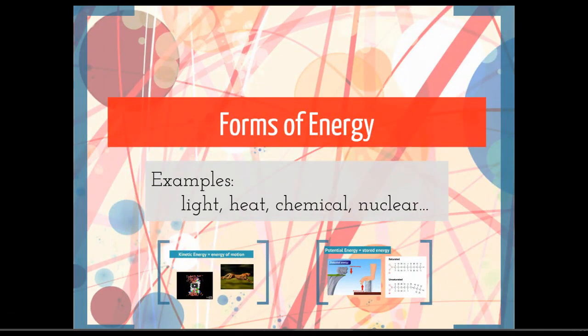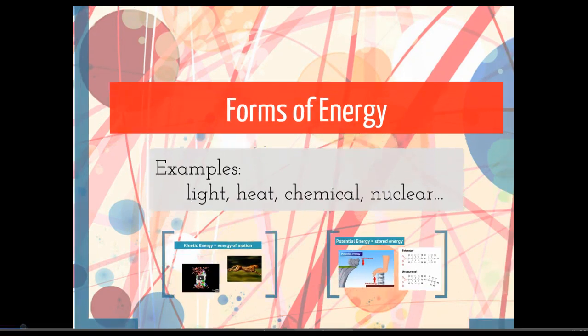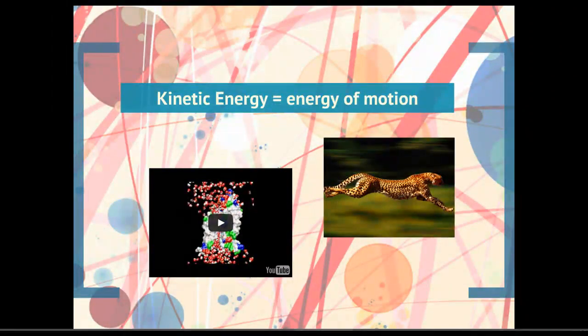Let's talk about energy briefly and then the rest of this lecture will focus on different kinds of matter. Some examples of forms of energy would be light, heat, chemical energy, nuclear energy. We can classify energy into two different kinds. Kinetic energy is the energy of motion. And this is what most of us think about when you see this fantastic cheetah running. That is kinetic energy at its finest.